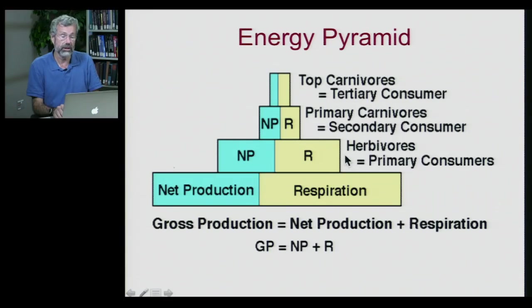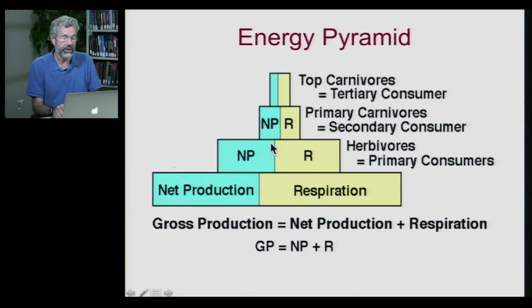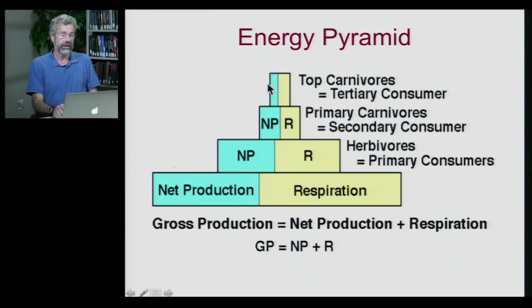The primary consumers — the herbivores — must eat out of the plant material. Out of the energy they receive from the plants, they have to consume a fair amount in their own respiration. This happens at the next layer up as well, for the primary carnivores eating the herbivores. They can only take energy from what they can eat, and must use some of that energy for their own respiration, and so on. As we go up, fewer and fewer individuals can thrive at higher and higher trophic levels.